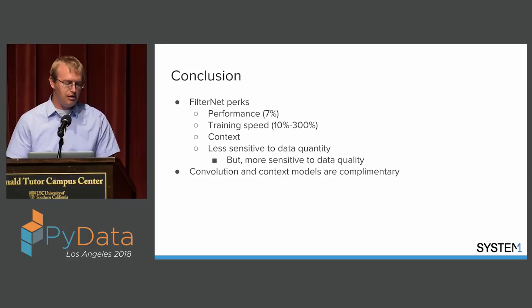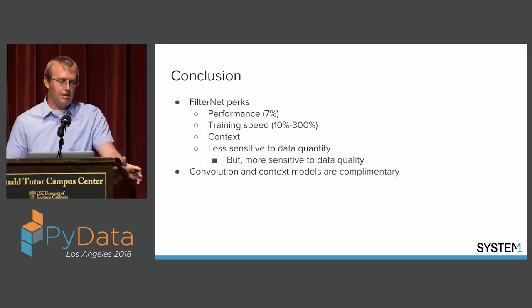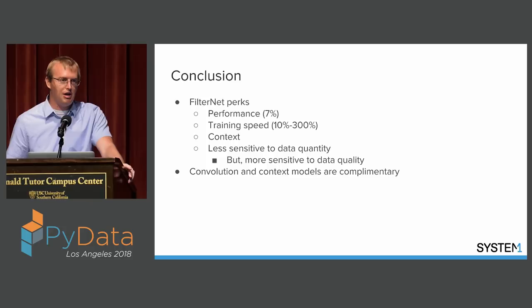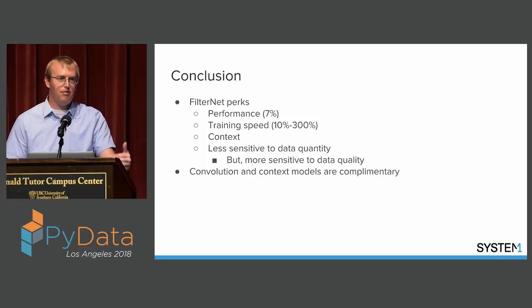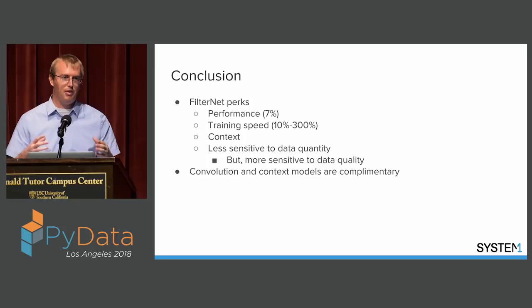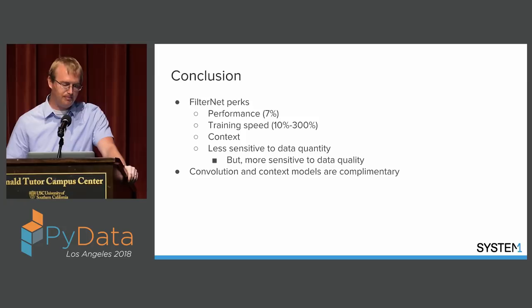In conclusion, this model has a lot of great perks: about 7% performance improvement over our best current model; training speed improvement of anywhere between 10 and 300% depending on what you're doing; you can save pre-trained PyTorch models to further increase training speed on new data; you can include contextual features, which we couldn't do before; and it's less sensitive to the amount of training data. The drawback is greater susceptibility to missing data quality. We also found that the convolutional side and context model each perform well independently, but when combined they're complementary and outperform either running alone.